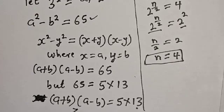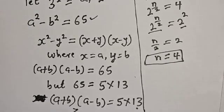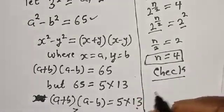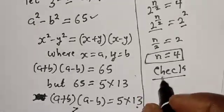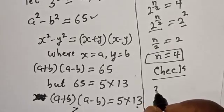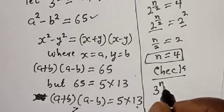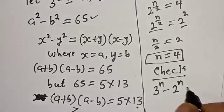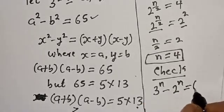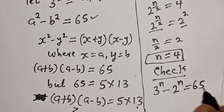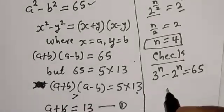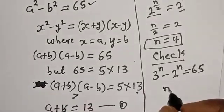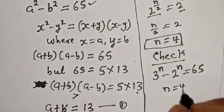Let's check to confirm if our answer is right. We have the given equation: 3 raised to power n minus 2 raised to power n must equal 65, with n equals 4. Substituting n equals 4: 3 to the 4th power minus 2 to the 4th power equals 81 minus 16 equals 65. Correct!